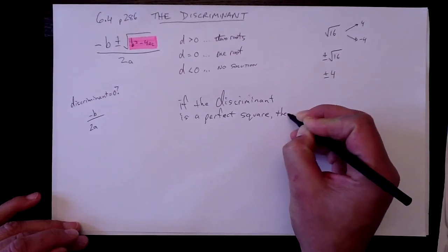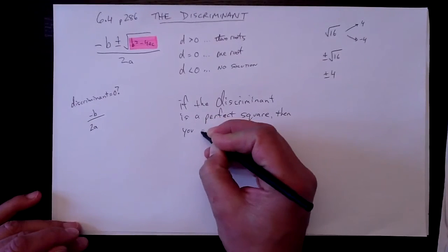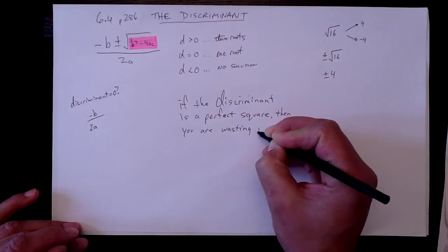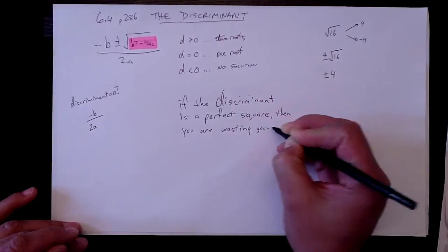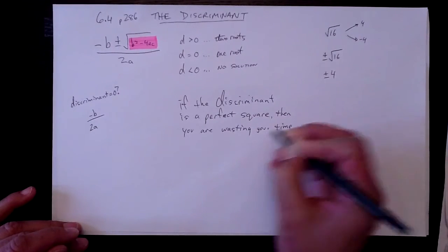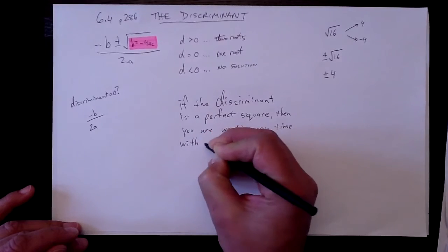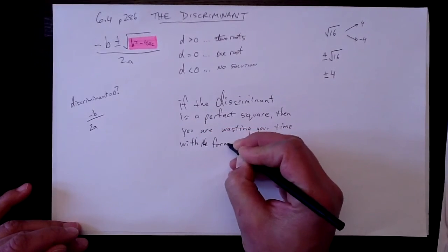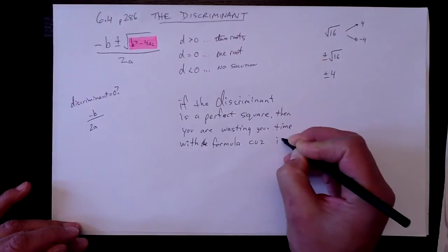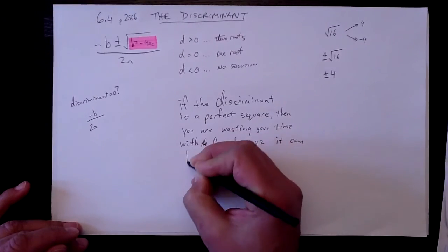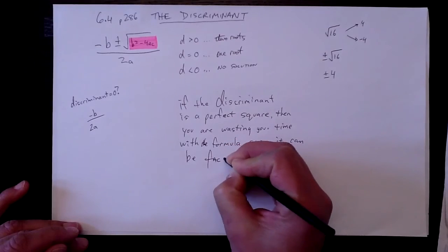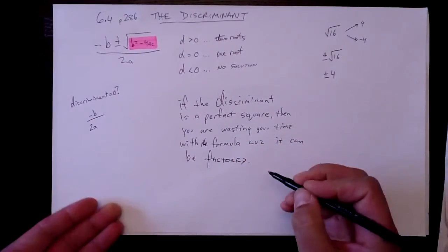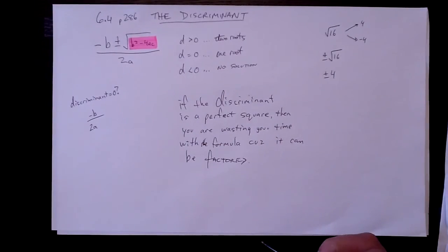then you are wasting your time with the formula because it can be factored. That's right. Your trinomial can be factored if the discriminant is a perfect square.